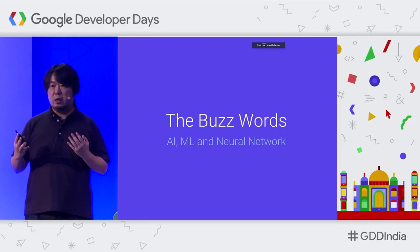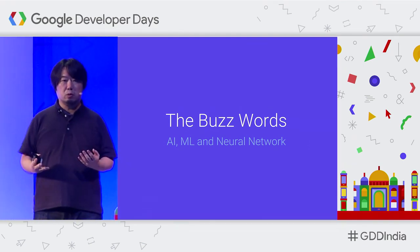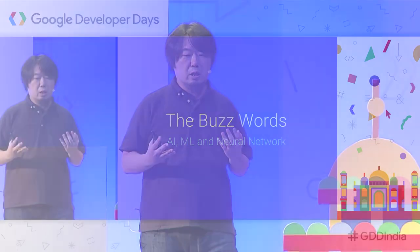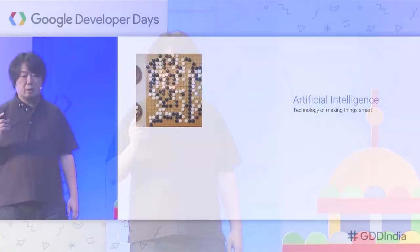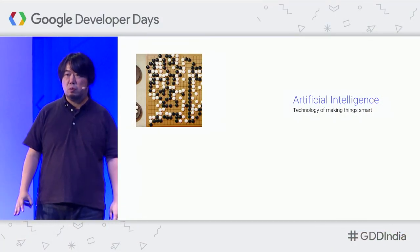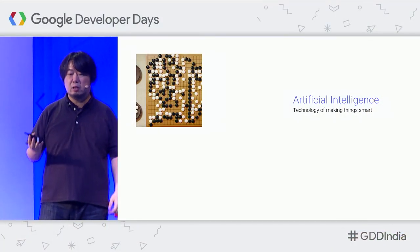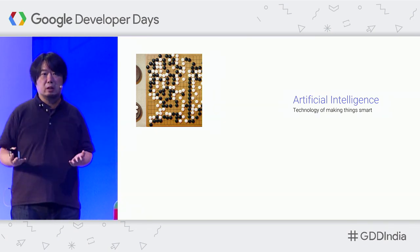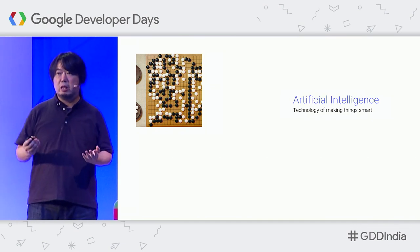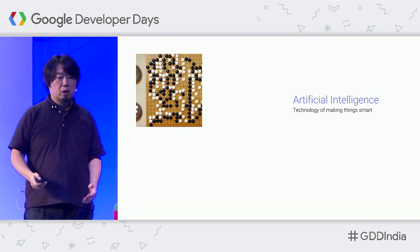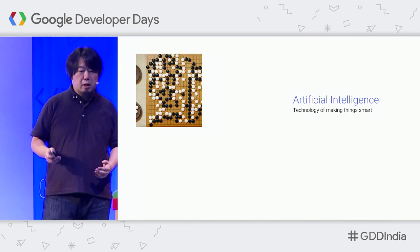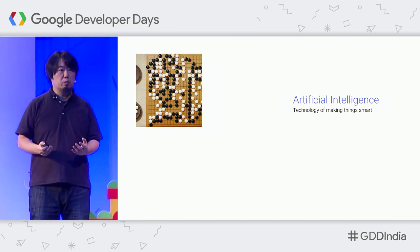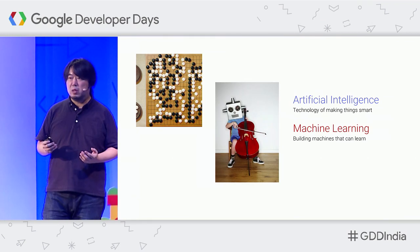Before we dive deeper into the machine learning products from Google, I'd like to discuss the differences between AI, machine learning, and neural networks. AI has no strict scientific definition, but you can say it's a technology or science to make things smarter, like autonomous driving cars or letting computers draw beautiful pictures. There have been many approaches to realize the vision of AI, and one of them is machine learning.